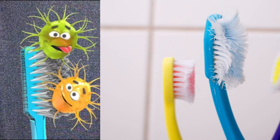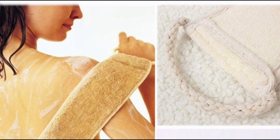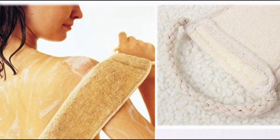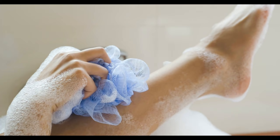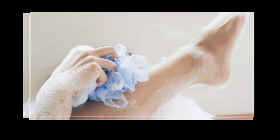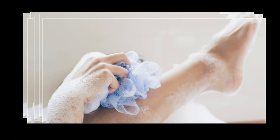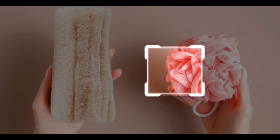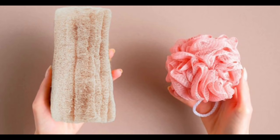The loofah. You may also love to use the loofah every time you take a bath. By their nature, loofah sponges have lots of nooks and crannies and they're very porous. When people use loofahs to scrub off dead skin cells, those cells become lodged in the nooks and crannies.